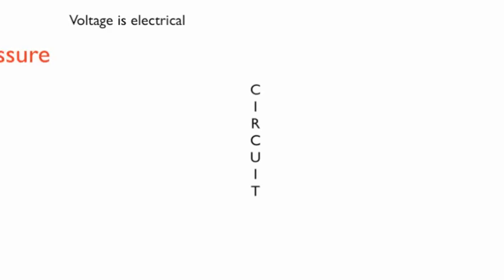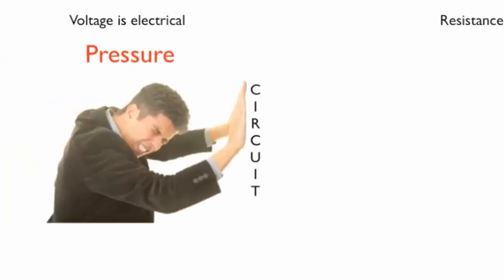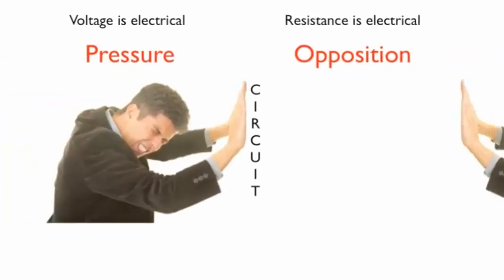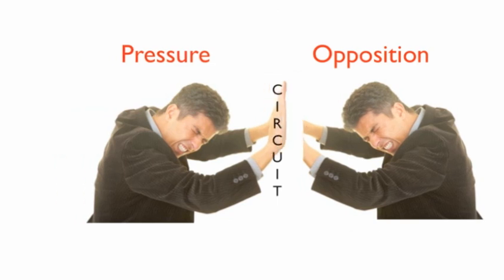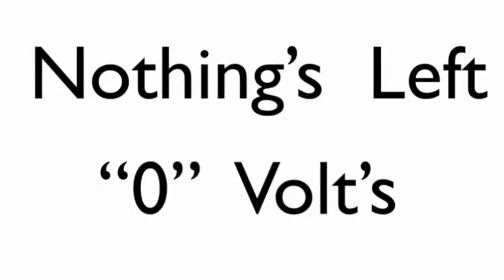So in the circuit, voltage is electrical pressure and resistance is electrical opposition to that pressure. Remember, the purpose of volts is to overcome the resistance in the circuit. So when that pressure completely overcomes the opposition, nothing is left. Zero volts.